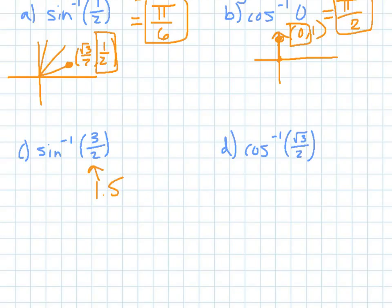So since 1.5 is greater than 1 in our interval, then this means it does not exist. So it's not actually a value that you can get for inverse sine ever.